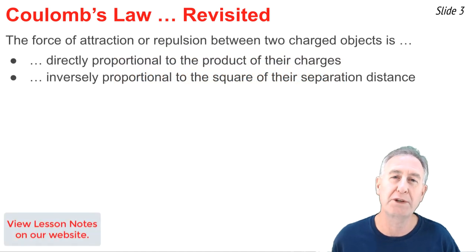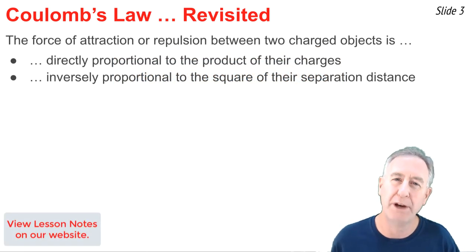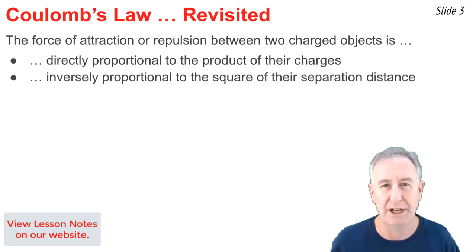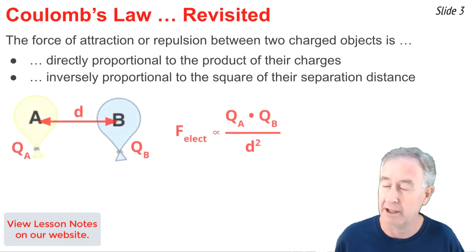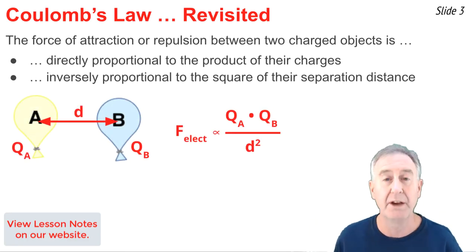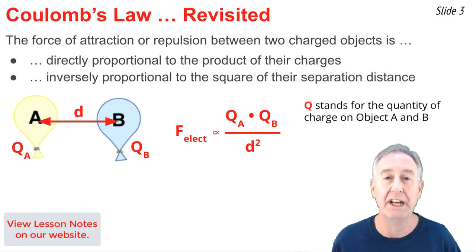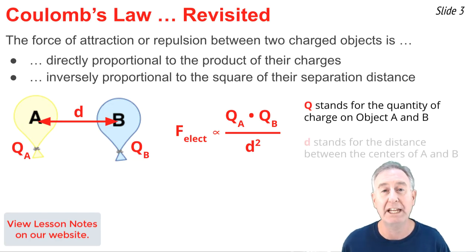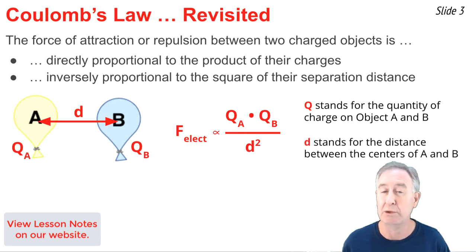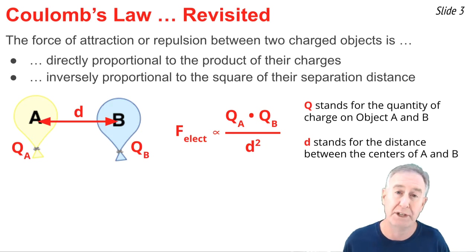Coulomb's Law states that the electric force between any two charged objects is directly proportional to the product of the charges upon those objects, and inversely proportional to the square of the separation distance. Written as a proportionality statement, it would look something like this, where Q represents the quantity of charge on either object A or object B, and D represents the separation distance between these two charged objects. As shown on the diagram, it's measured from the center of one object to the center of the other object.